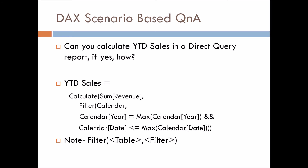For year-to-date sales in DirectQuery, we can make use of the FILTER and MAX DAX functions. FILTER takes the first argument as a table and the second argument as a filter condition. For the table, we have used the calendar table. For the filter, we have provided two conditions: first, the calendar year should be equal to MAX of calendar year; and second, the calendar date should be less than or equal to MAX of calendar date. So suppose you have a year slicer and a month slicer, and you choose 2021 on the year slicer and September on the month slicer. The year condition gives you 2021, and the date filter gives you the maximum date of September — say the 7th of September. So it will calculate the total sales of 2021 from 1st January to 7th September 2021.